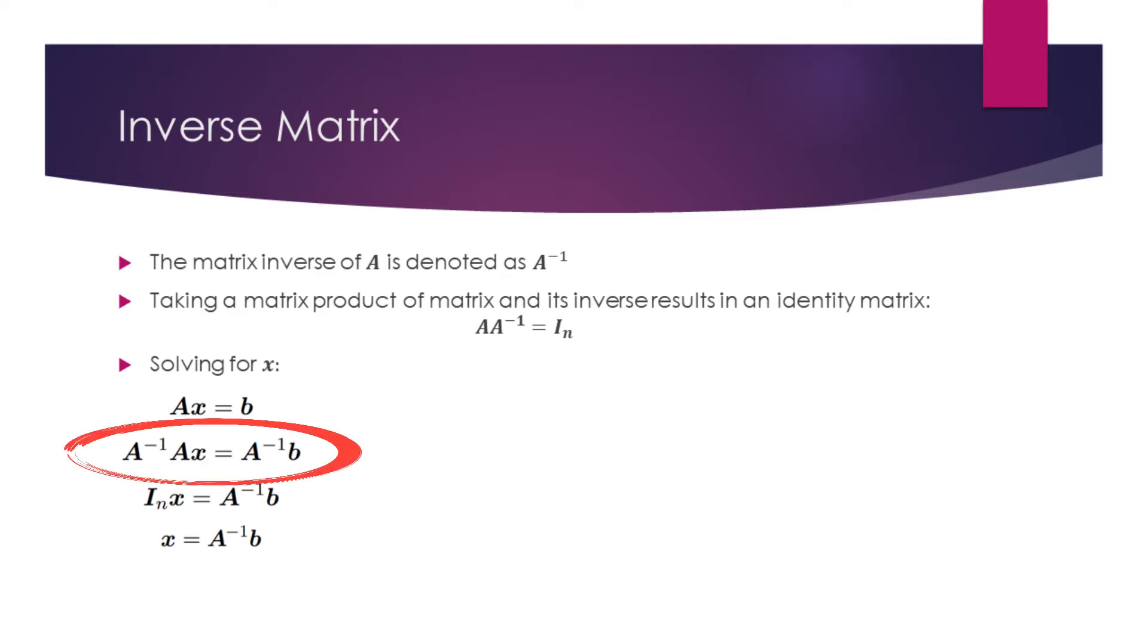On the left side, we have a matrix multiplied by its inverse. By definition, this is equal to the identity matrix. So it becomes an identity matrix multiplied by the vector x.